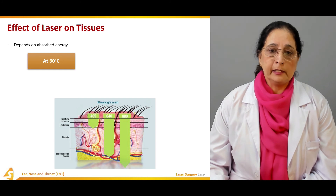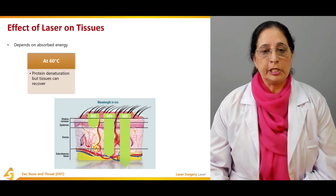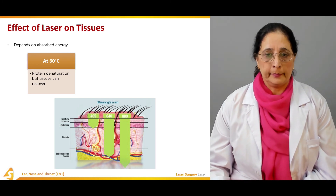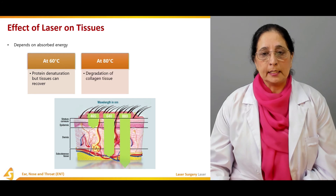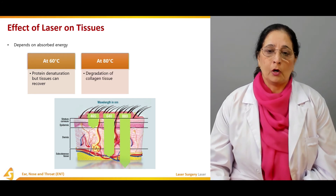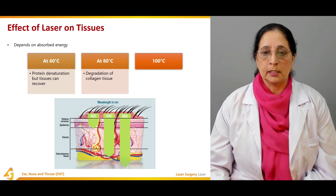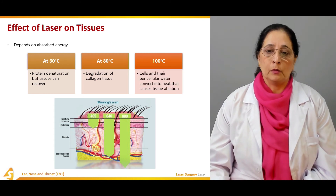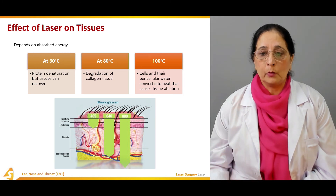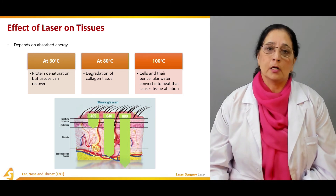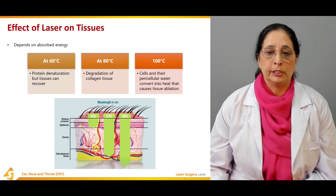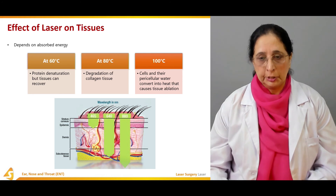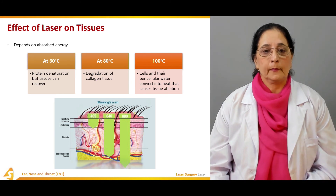At 60 degrees Celsius, protein denaturation occurs but tissue can recover from the injury. At 80 degrees Celsius, degradation of collagen tissue occurs. At about 100 degrees Celsius, cells and their pericellular water convert into heat, causing tissue ablation and tissue death. These are the temperature-dependent effects of laser on tissue.